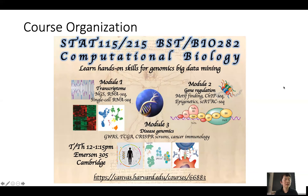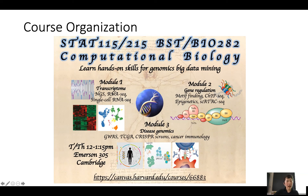So finally the course organization — you probably have seen the flyers around campus. This course is under four different course numbers, but they are essentially the same course. We divide the course into three modules. The first is all on gene expression and transcriptome. We start by teaching you what high-throughput sequencing is, how to do read mapping, RNA-seq analysis, differential expression, clustering, and sample classification, ending with analysis of single-cell RNA-seq data.